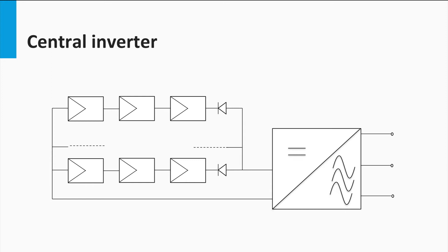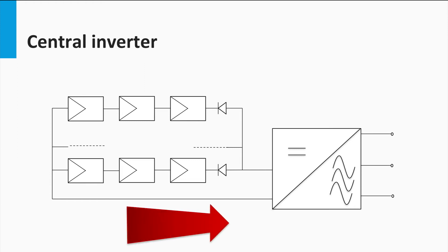Let's start with the central inverter. This is the most traditional inverter topology in use. As seen in the figure, this is a simple implementation with one central inverter catering to all the PV modules in a PV system. While this inverter topology increases the ease of system design and implementation, it suffers from several drawbacks. In large systems, large amounts of DC power will be transferred over long cables to reach the central inverter.